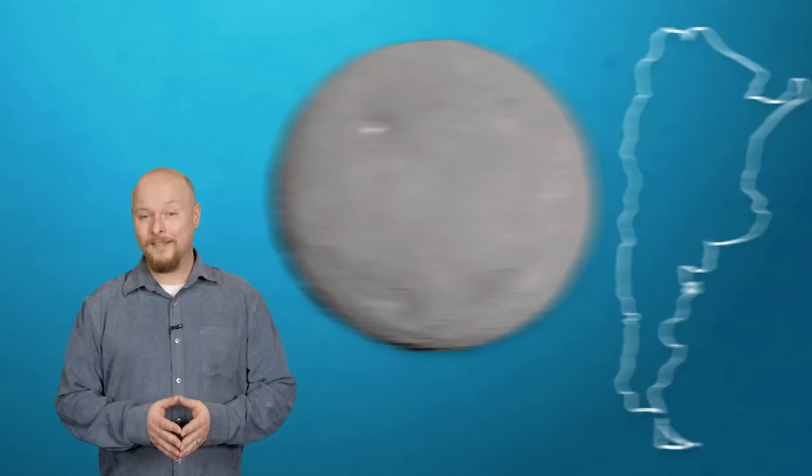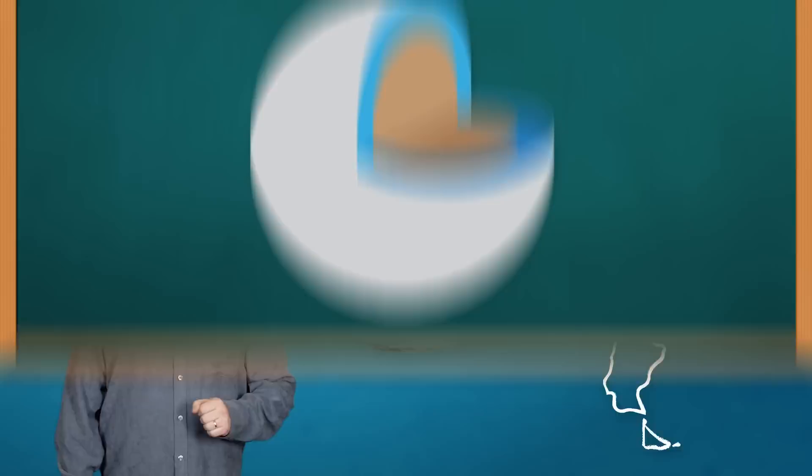But its total surface area is about 2.8 million square kilometers. That's about as much total real estate as the country of Argentina. If you were to take a cross-section of Ceres, you would find a rocky core at the center and a dusty outer crust on the surface, but in between them, a subterranean mantle of water ice.